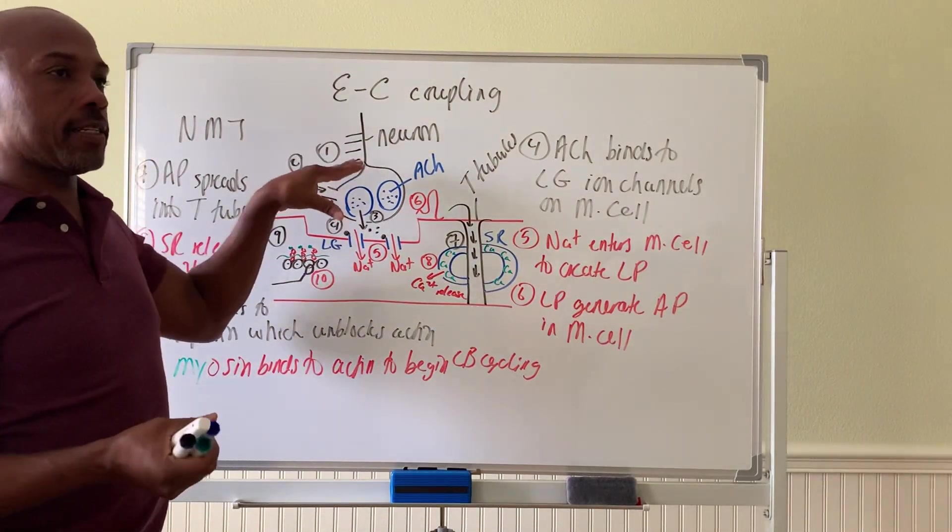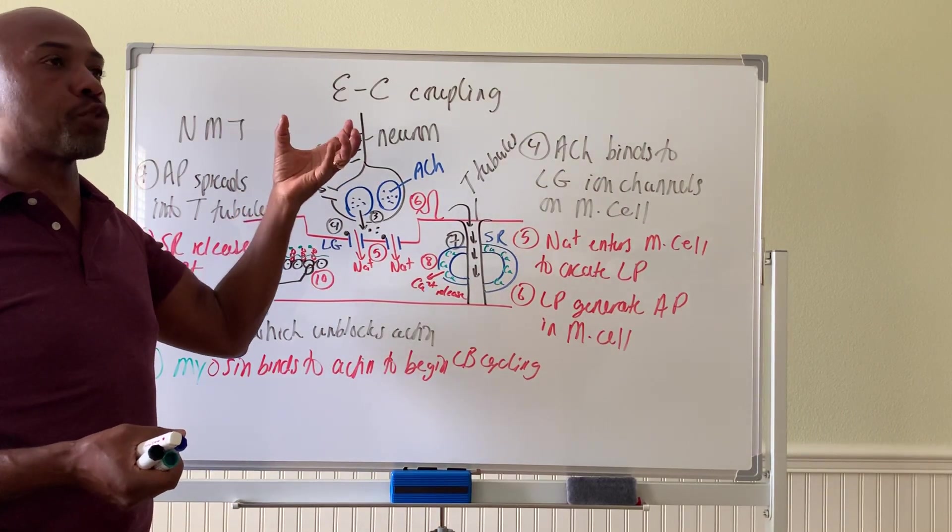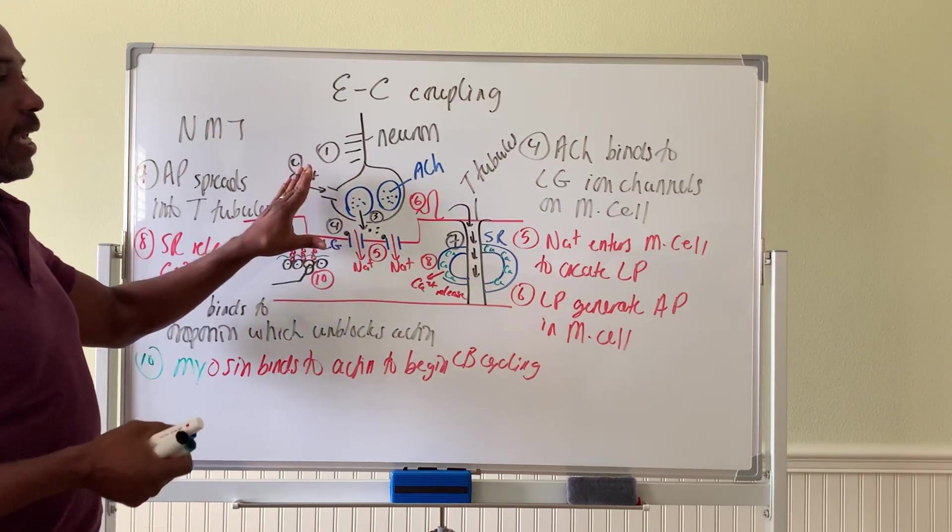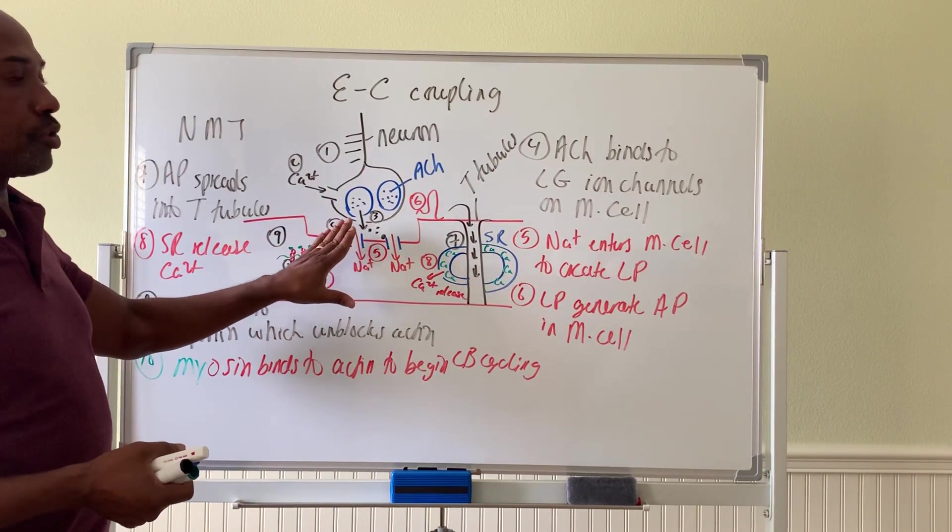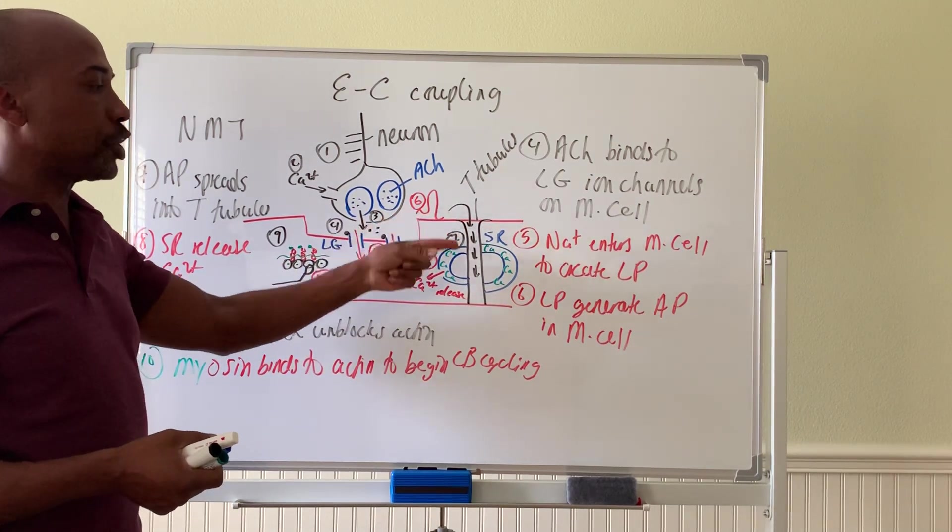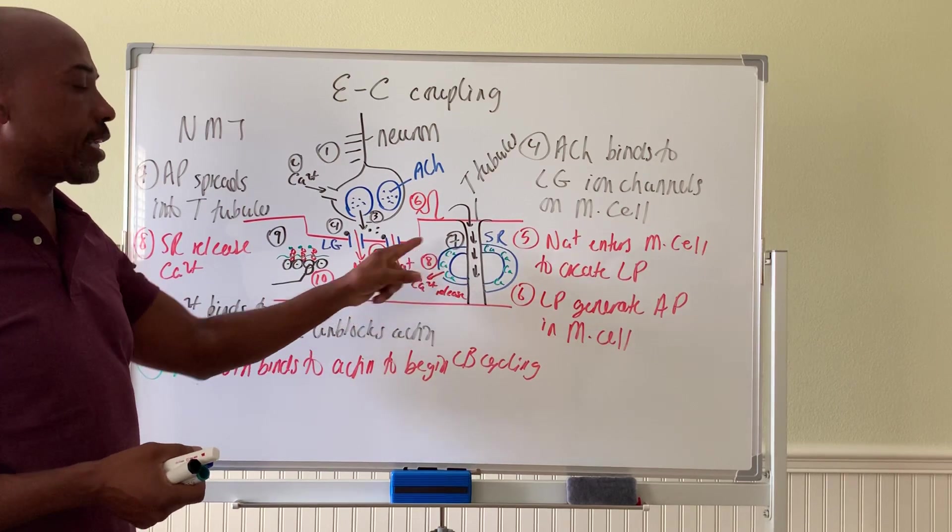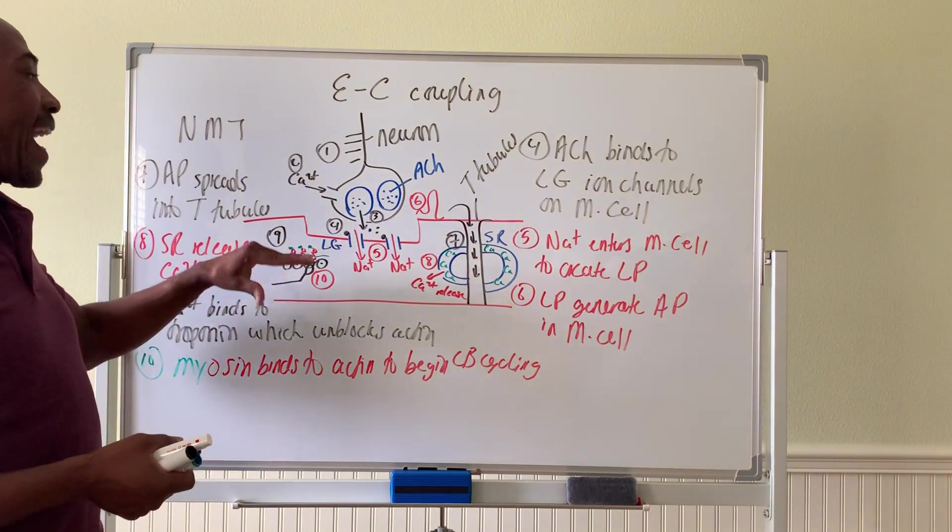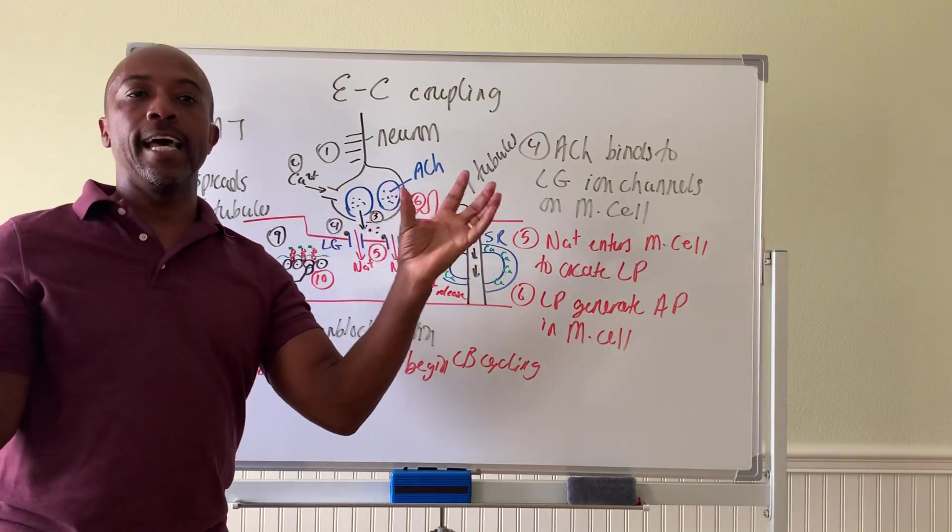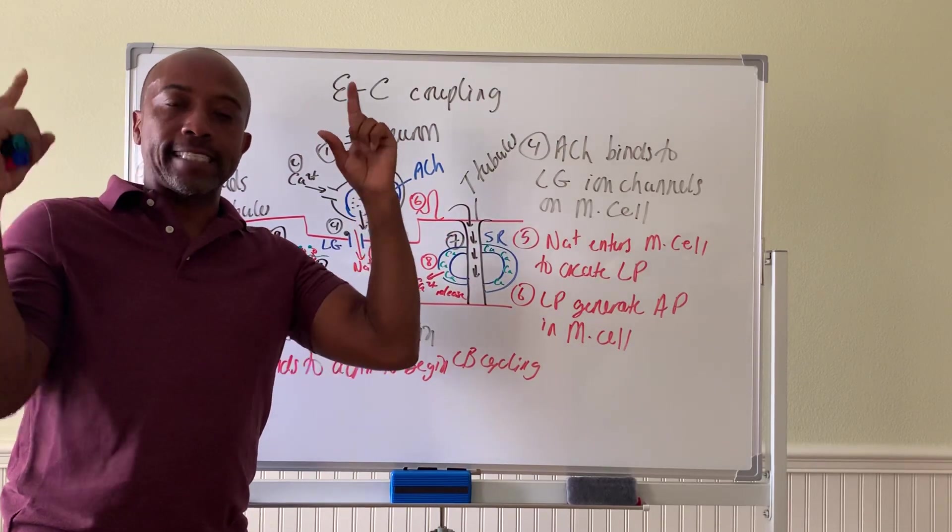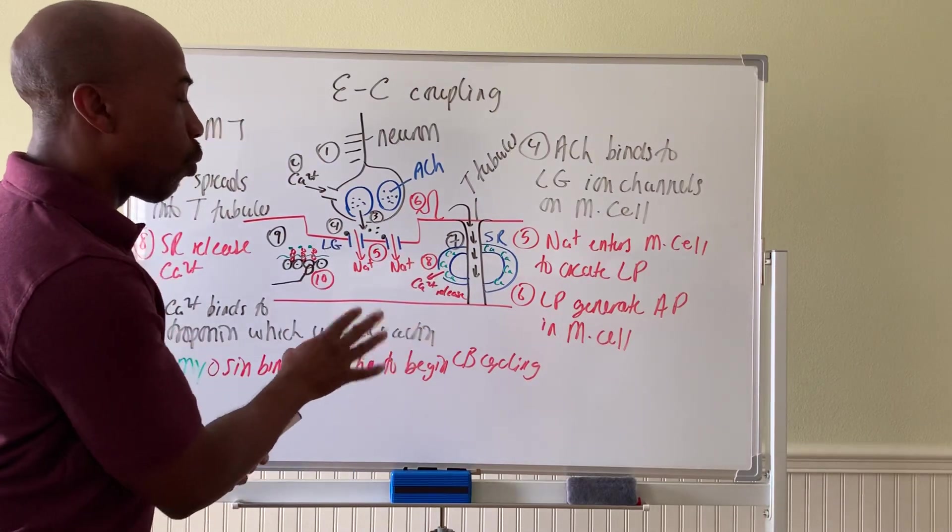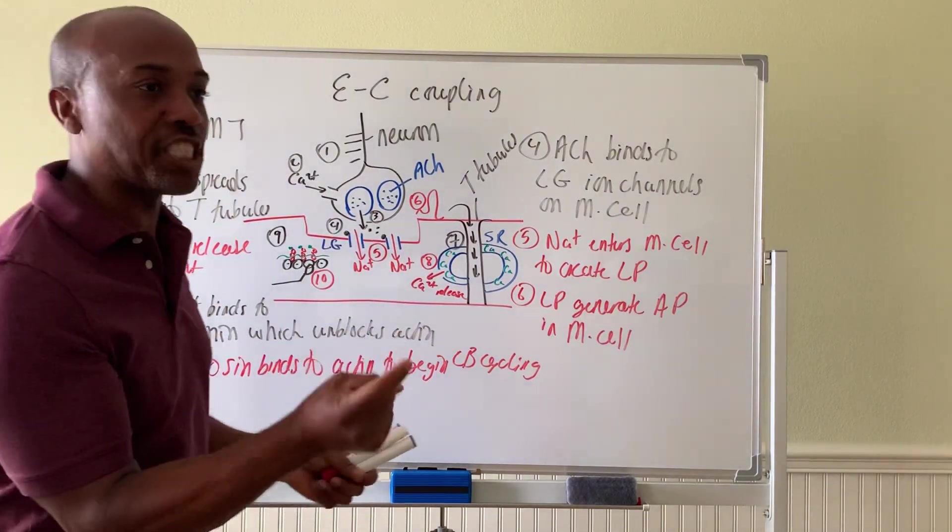And that's how a neuron is required—an action potential is required. A nerve impulse is required to travel down the neuron to the NMJ to open up ligand-gated channels that will create an action potential in the muscle cell that will eventually trigger the SR to release calcium to bind to troponin, which will unblock actin to allow for your myosin to grab it and begin your crossbridge cycling. And therefore the muscle will shorten. That's called excitation-contraction coupling.